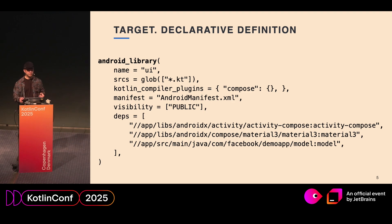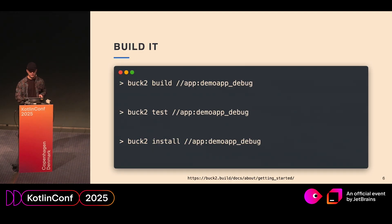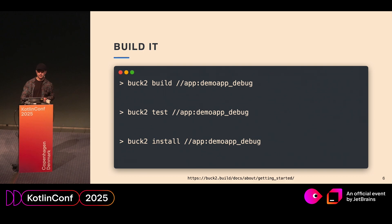For a build system, it's important not to be annoying. Most of the time, we don't want to interact with it. Buck2 follows this principle for the majority of cases. Define a library, build it, add dependencies as you write code — maybe even automatically in the IDE with completion — and you're done. Build it, test it, install it once the module is declared. Run an emulator if you want.